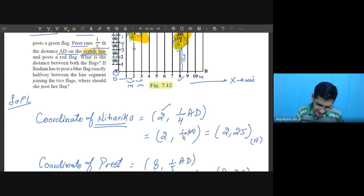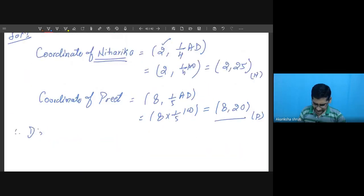What is the distance between both of the flags? Distance between both the flags means distance between the two students. So we have to apply the distance formula. Therefore write distance between Niharika and Preet, we have to apply the distance formula. Let me call this as NP.